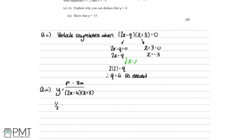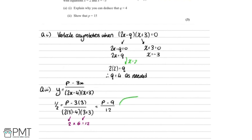Substituting x equals 3 and y equals a half, we get a half equals p minus 3 multiplied by 3, all over 2 multiplied by 3 minus 4, multiplied by 3 plus 3. Evaluating the brackets: 2 times 3 minus 4 gives 2, and 3 plus 3 gives 6, so the denominator is 2 times 6 equals 12. This gives us a half equals p minus 9 all over 12. Multiplying both sides by 12 gives 6 equals p minus 9, so p equals 6 plus 9, therefore p equals 15 as needed.